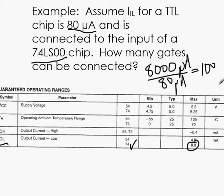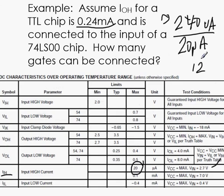So the fan in for this chip is 100. However, in the first example, we only got 12. So 12 is a lower number, so that means we can only go up to 12, because we have to consider both the output condition for high and the output condition for low. So it appears that the output condition for high is limiting our design to 12 connections.